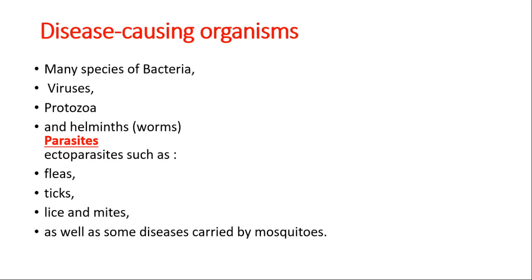A study of rats on farms in the UK found 13 zoonotic parasites and 10 zoonotic diseases, with some rats having 9 zoonotic parasites at the same time.